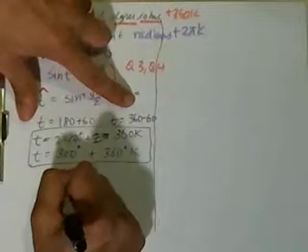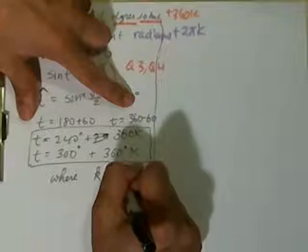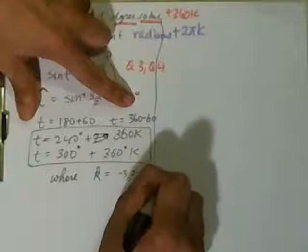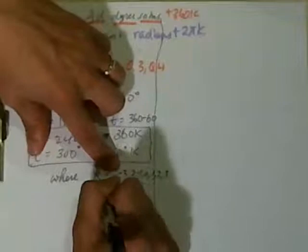Where K is equal to -3, -2, -1, 0, 1, 2, 3, dot, dot, dot. That's called the integer set. K is an element. This is how you write the integer set.